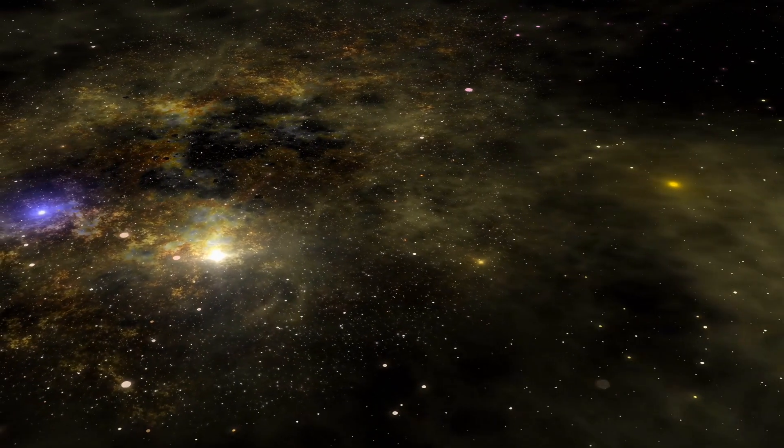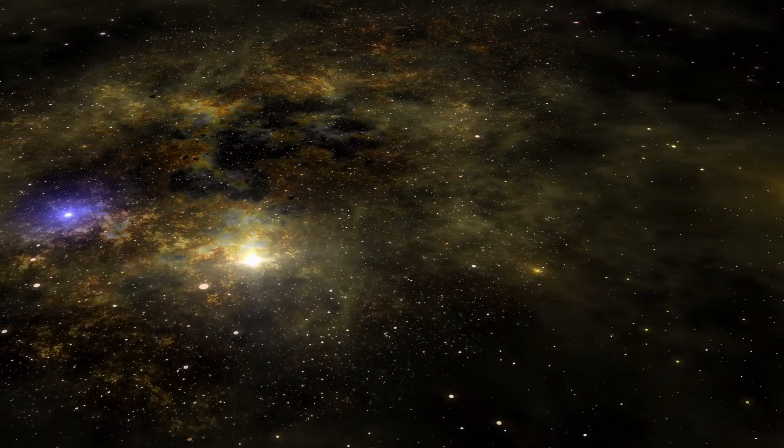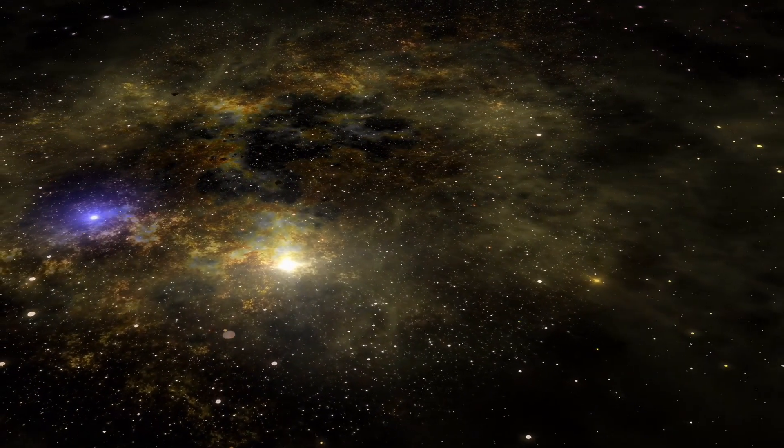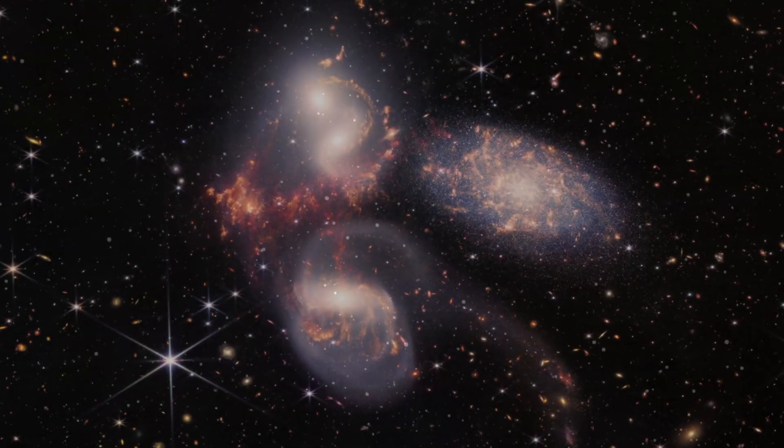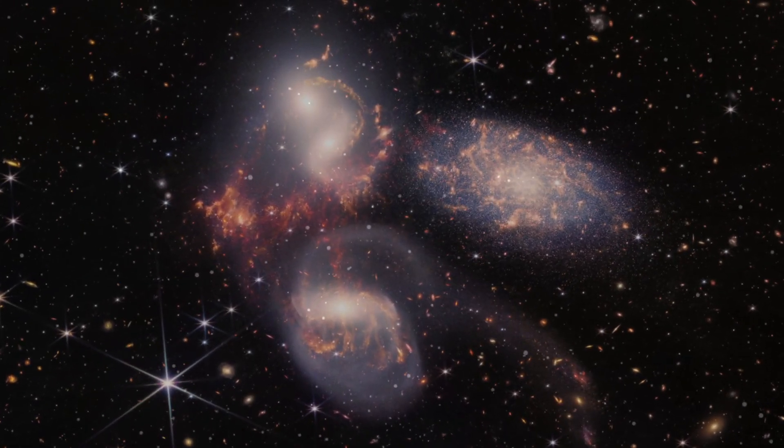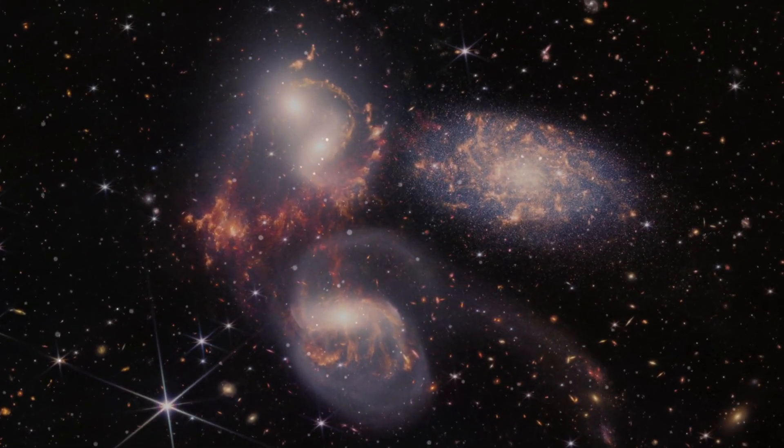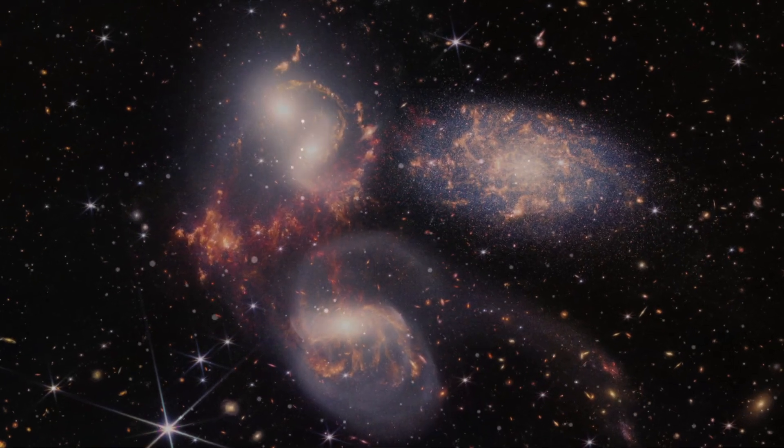Before the Hubble Deep Field photo, astronomers thought that the faraway parts of the universe would only have a few galaxies, and that most of those galaxies would be close to us. But this photo showed that the universe is packed with galaxies everywhere, even in tiny, empty-looking patches of the sky.